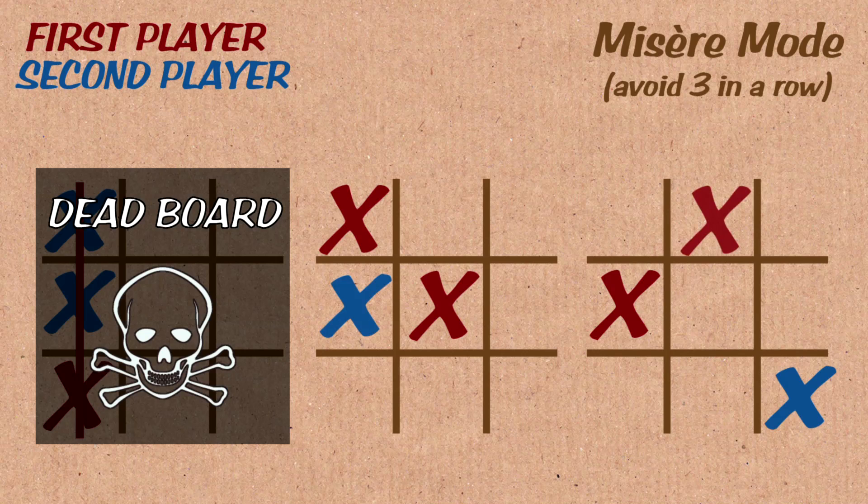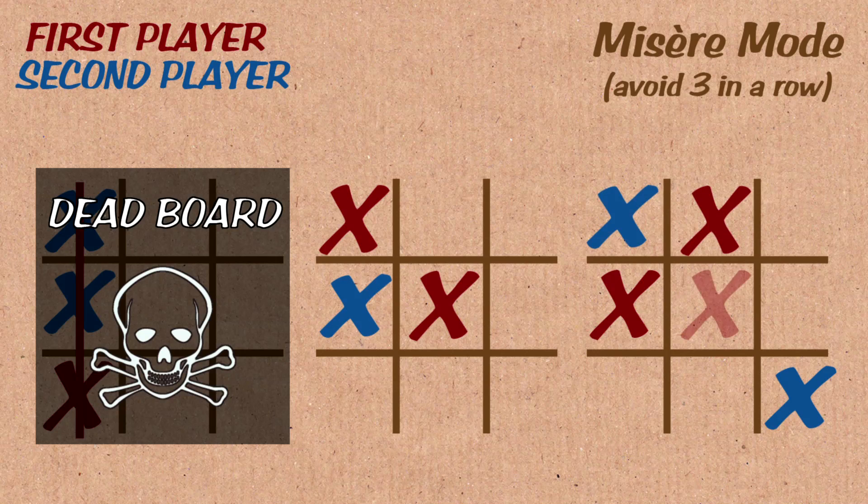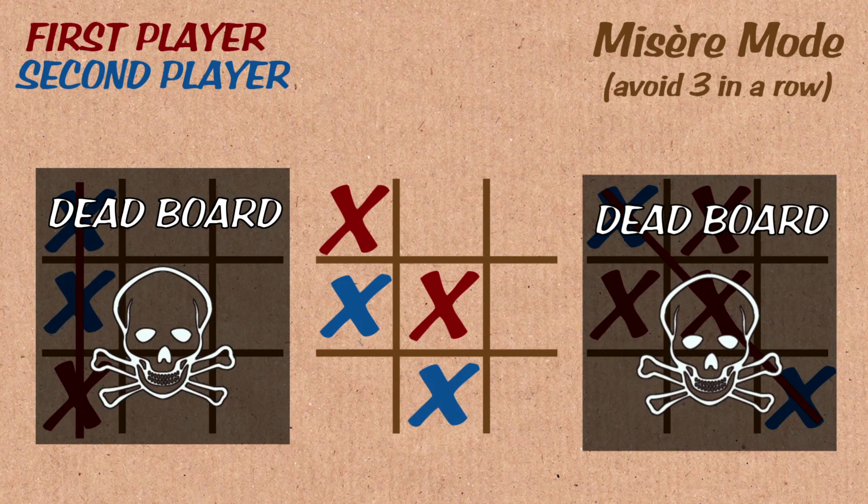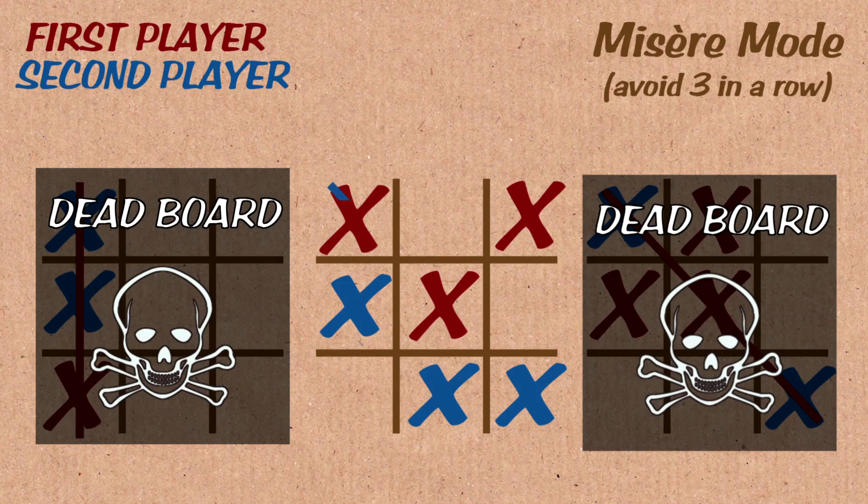Again, on one of the two remaining boards, once three in a row is made, that board dies, is no longer available for play, and then you're left with whatever configuration of X's may be on the third board, and you complete that board. Whoever makes three in a row on the final board loses the game.